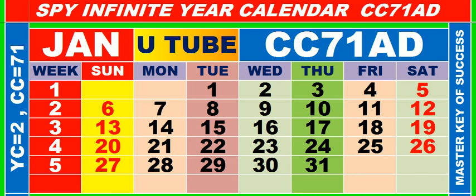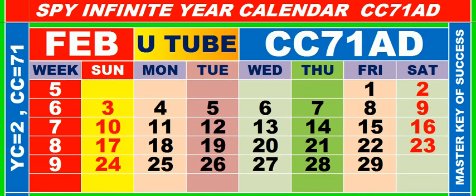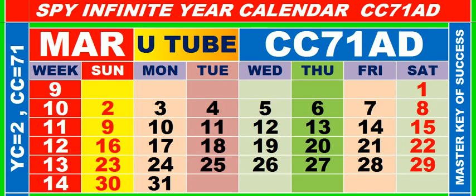Calendar for the month of January, having calendar code equal to 71. Calendar for the month of February, having calendar code equal to 71. Calendar for the month of March, having calendar code equal to 71.